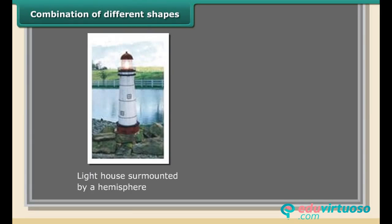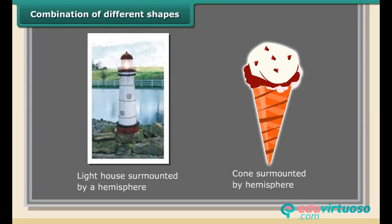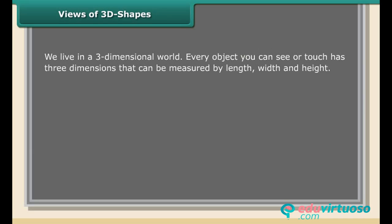Combination of different shapes: A lighthouse surmounted by a hemisphere and cones. The above shapes are a combination of different shapes we use in our day-to-day life. Views of 3D shapes: We live in a three-dimensional world. Every object you can see or touch has three dimensions that can be measured by length, width, and height.